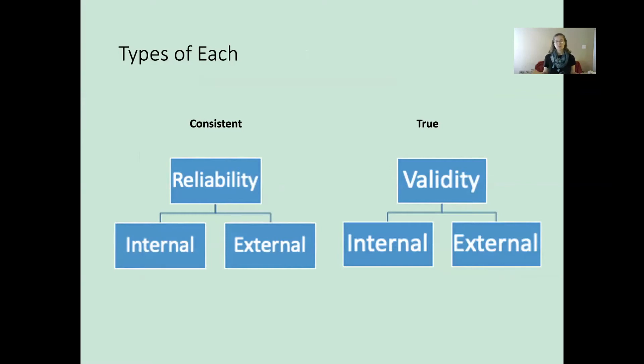Reliability and validity each have two types, internal and external, and I'm going to talk about them each individually with some examples.